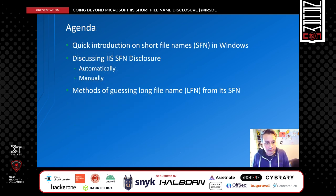Today I will start with an introduction on what short and long file names are in Windows. Then I will continue by explaining IIS short file name disclosure automatically and manually. After this presentation, you should be able to use a simple web proxy to identify an IIS short file name disclosure issue manually. In the end, I will mention some methods to guess the long file names using their short version, and a special case where the whole long file name can be enumerated using IIS.